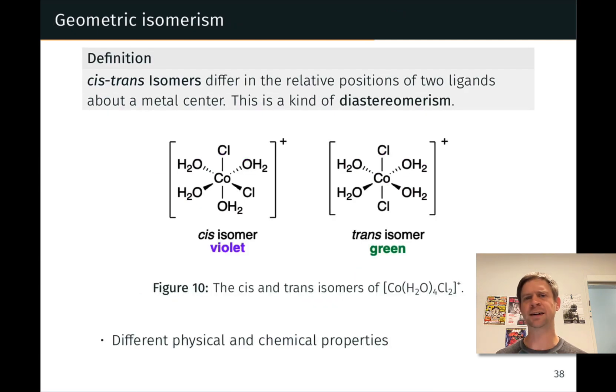When it comes to diastereomers, cis-trans or geometric isomerism is one of the most common types of diastereomeric relationship that we see. The idea of cis-trans isomerism is that cis and trans isomers differ in the relative positions of two ligands about the metal center. And in differing in this way, the two isomers cannot possibly be mirror images, as we'll see, because there is a different internal distance or internal bond angle between the two ligands whose positions differ between the cis and trans isomers.